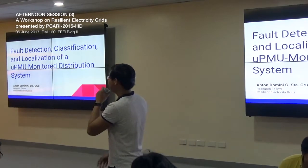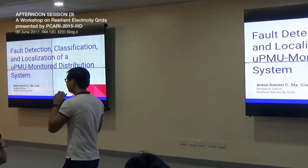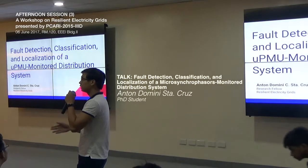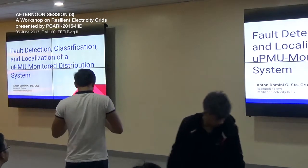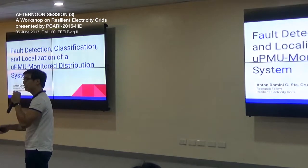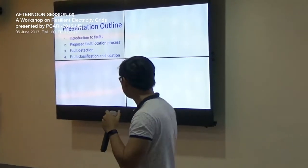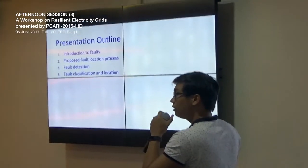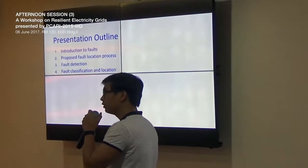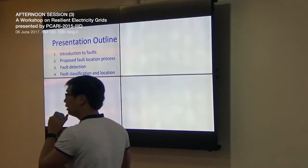Hello. I'm Anton Santa Cruz, a research fellow at the Resilient Electricity Grids Project. For this presentation, I'll give an overview of one possible fault localization process. A full fault localization process includes detection, classification — determining what type of fault happened — and finally, determining where the fault happened. My presentation covers an overview of faults, and then my proposed fault localization process involving two main blocks: a fault detection block, and a fault classification and localization block.